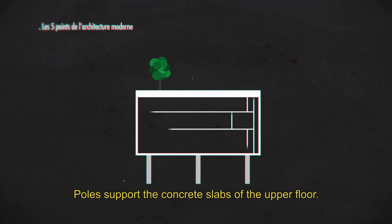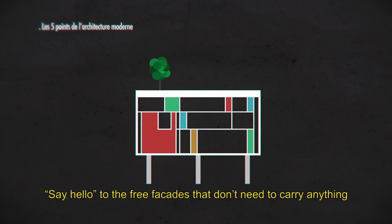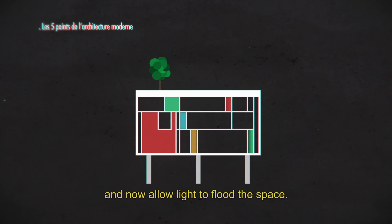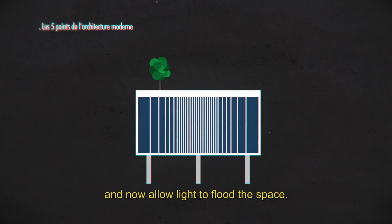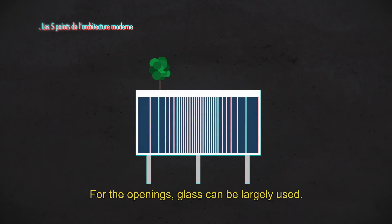Pilotis support the concrete slabs of the upper floor. Say hello to the three façades that don't need to carry anything and now allow light to flood the space. For the openings, glass can be largely used.